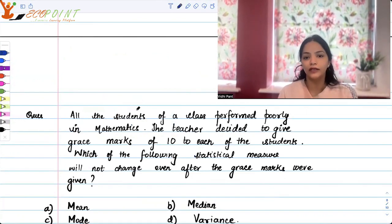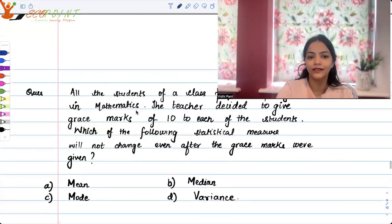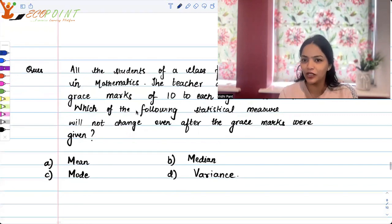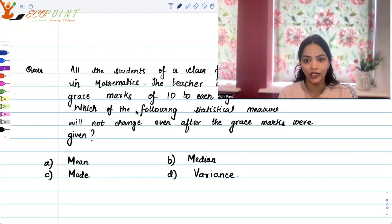All the students of a class performed poorly in mathematics. The teacher decided to give grace marks of 10 to each of the students. Which of the following statistical measure will not change even after the grace marks were given? So is it the mean that will not change? I think you should pause and answer that to yourself. Is it the median that will not change? Is it the mode which will not change? Or is it the variance which will not change?